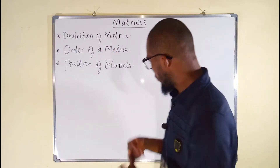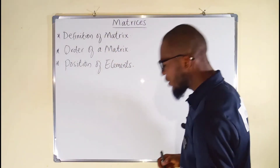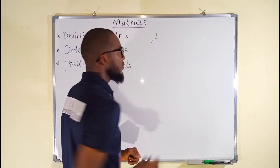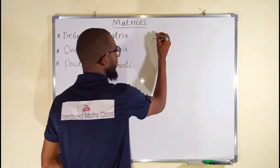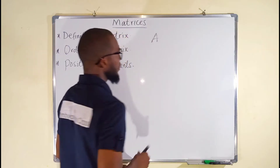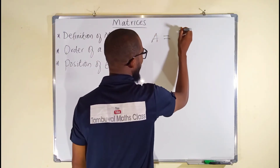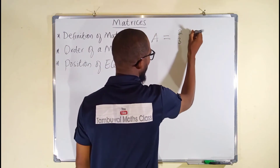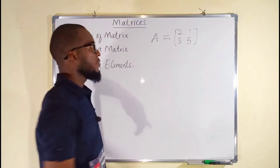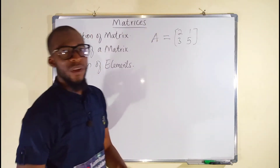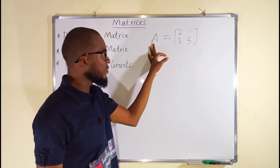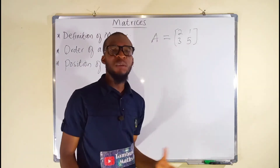Now let us see how we can represent a matrix. Suppose we have matrix A — remember, it is denoted by a capital letter, sometimes written in bold form. Suppose this is a matrix of numbers like 2, 3, 1, and 5. These are said to be the elements of matrix A, and they are enclosed under a bracket.